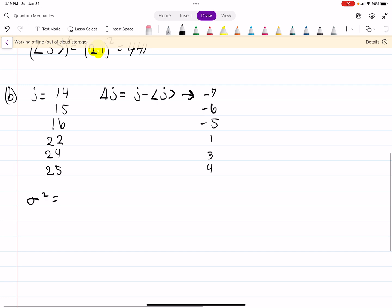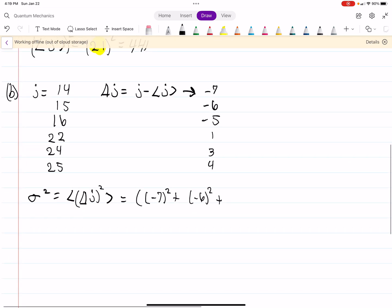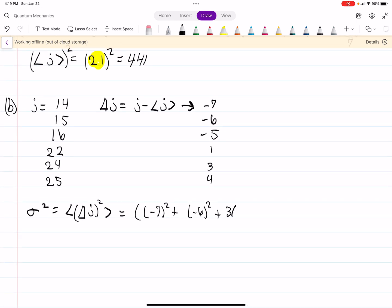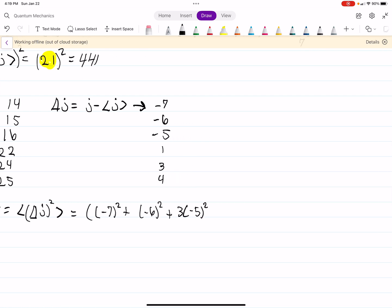And then from here, we can calculate our standard deviation, sigma squared. So sigma squared is our expectation value of delta J squared, like this. So, again, we know how to calculate expectation values. It's nothing crazy. We have negative 7 squared, plus negative 6 squared, plus, and then remember 16. We have three data points for 16. So, again, we multiply that by 3.